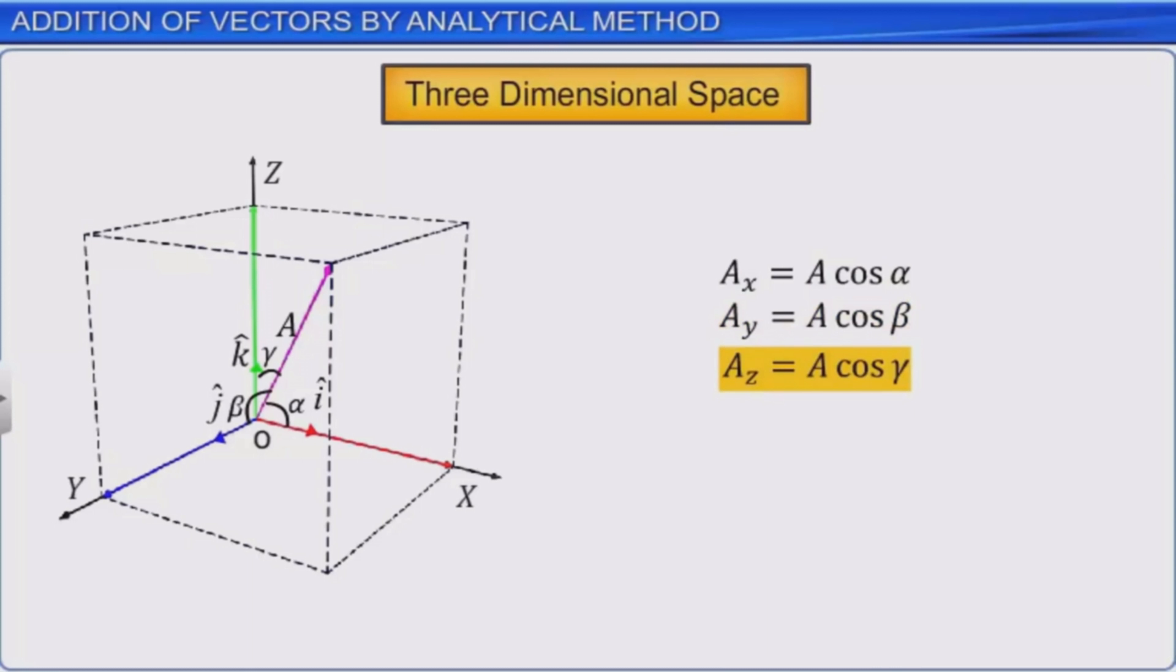Here A is equal to Ax plus Ay plus Az, which can be written as Ax i plus Ay j plus Az k. Here Ax, Ay, and Az are scalars and i, j, and k are unit vectors.